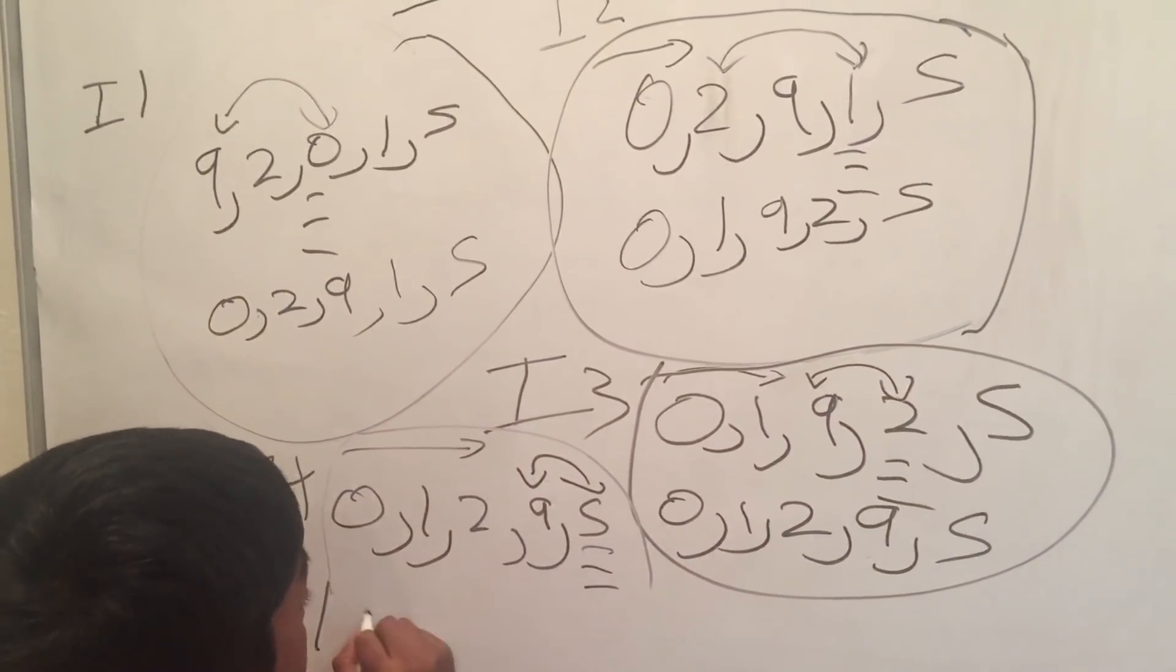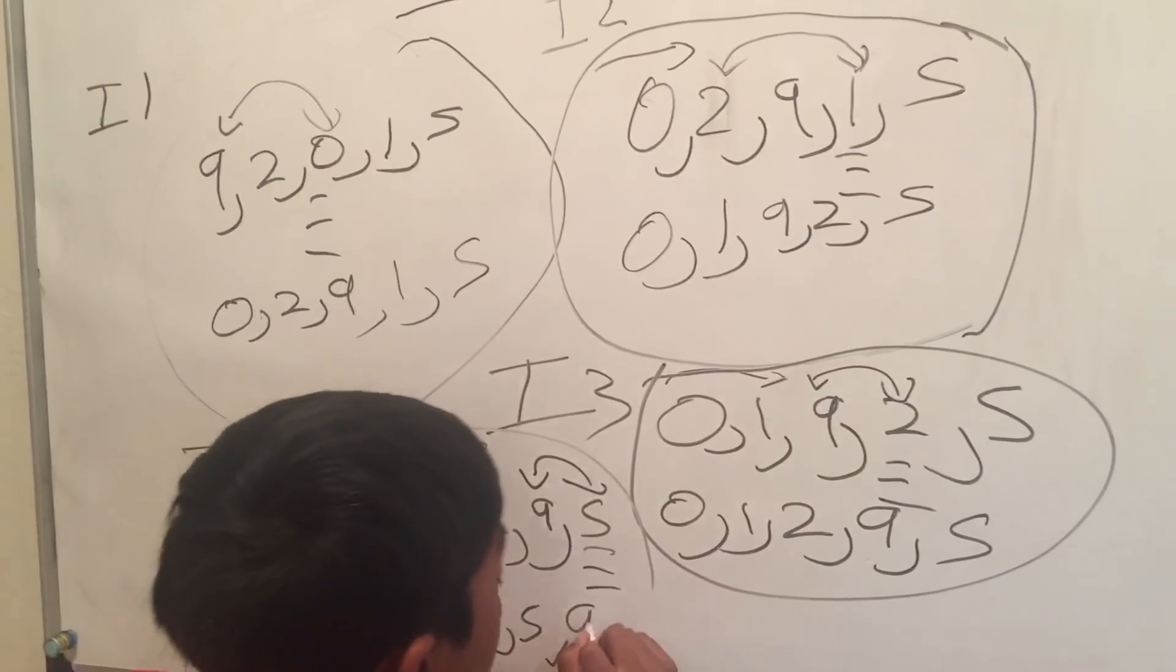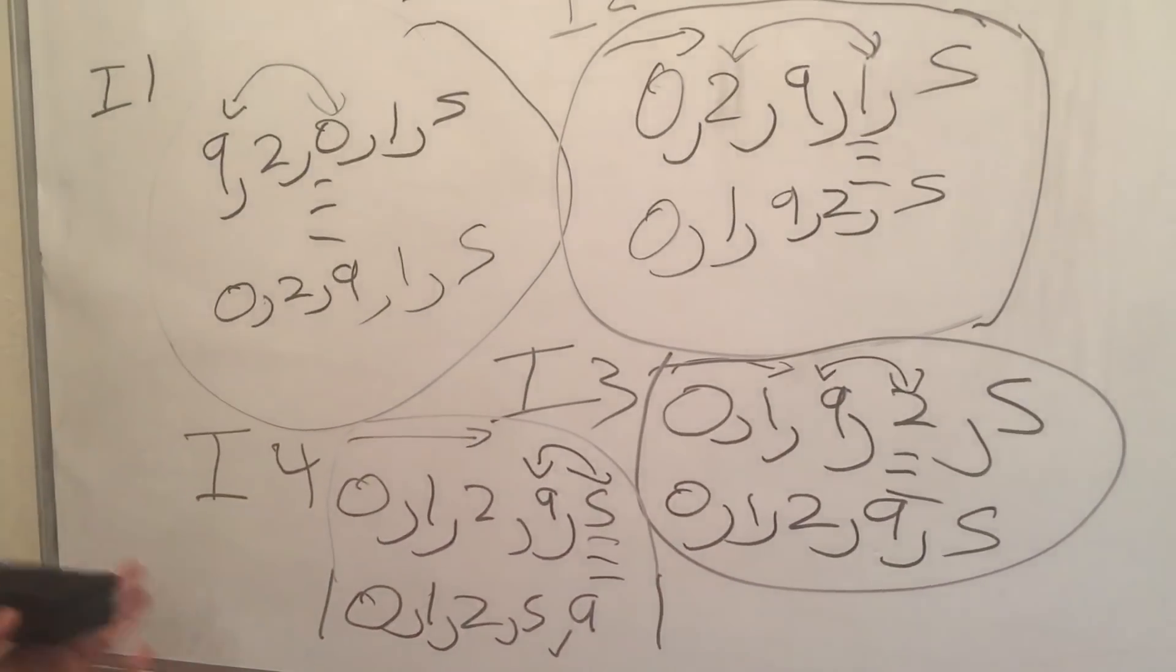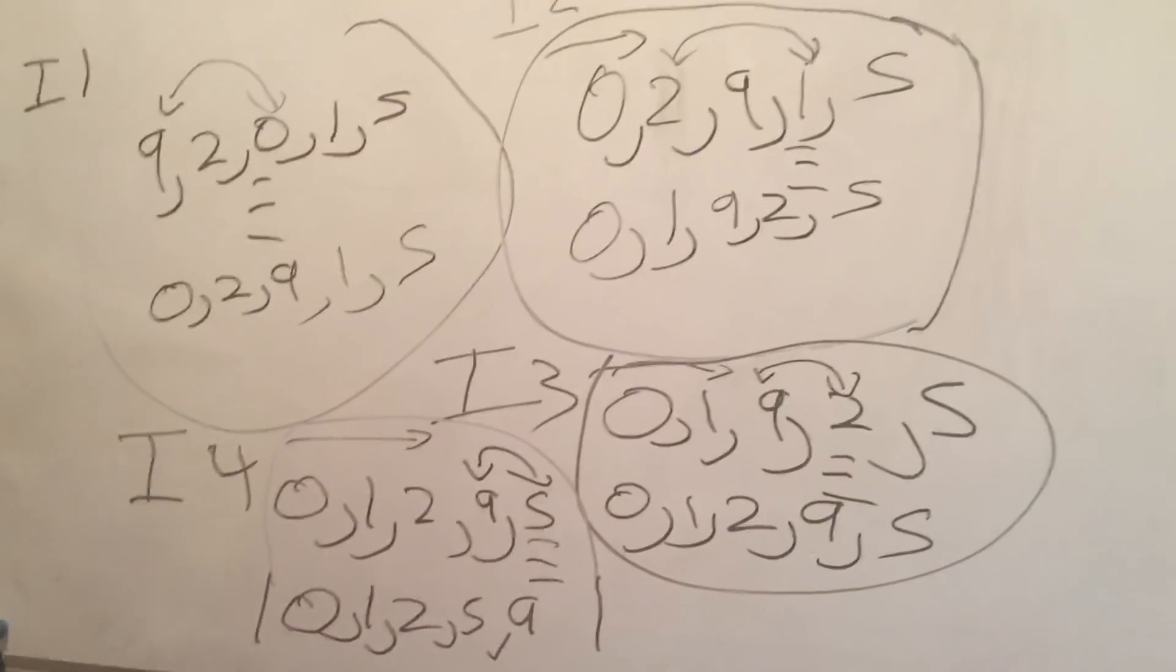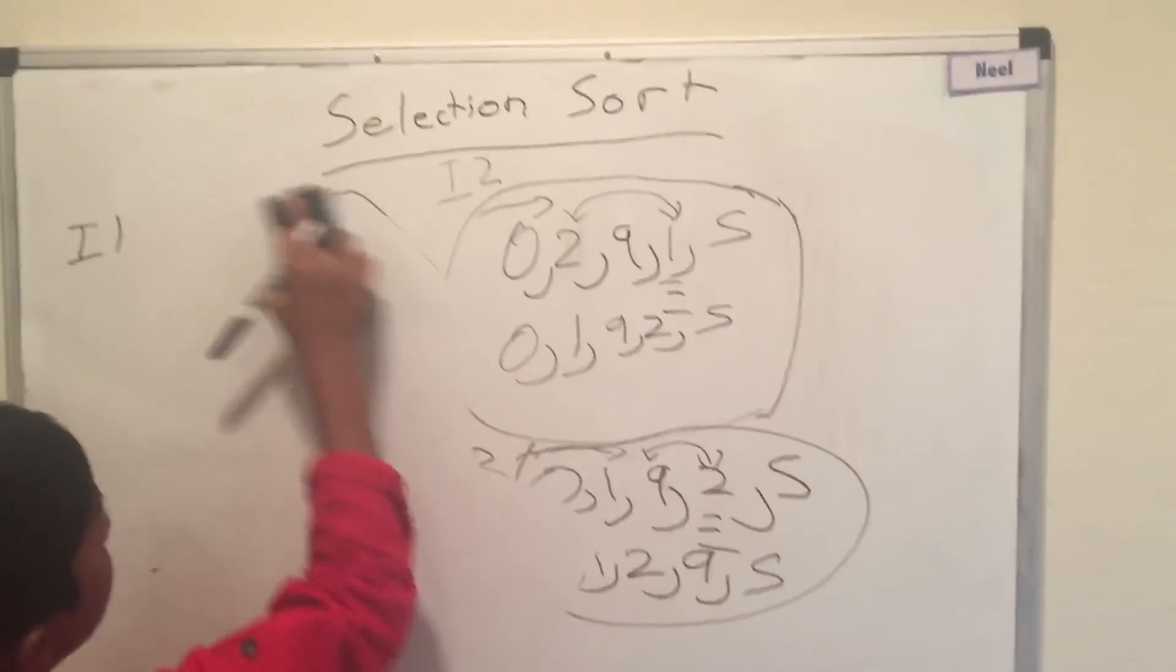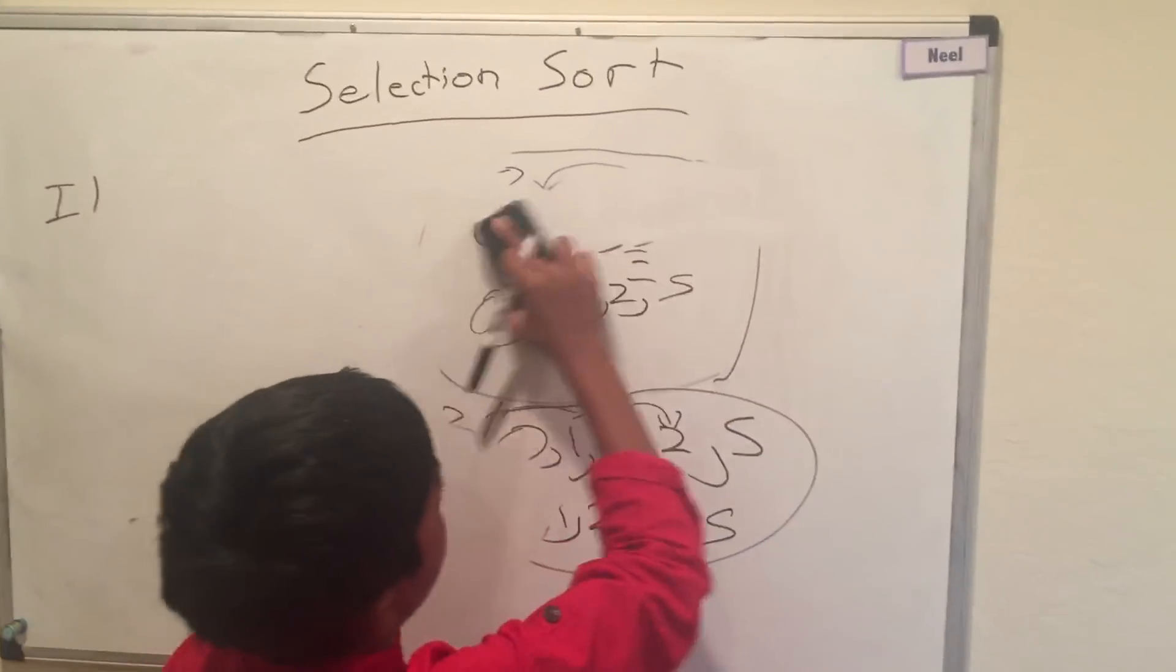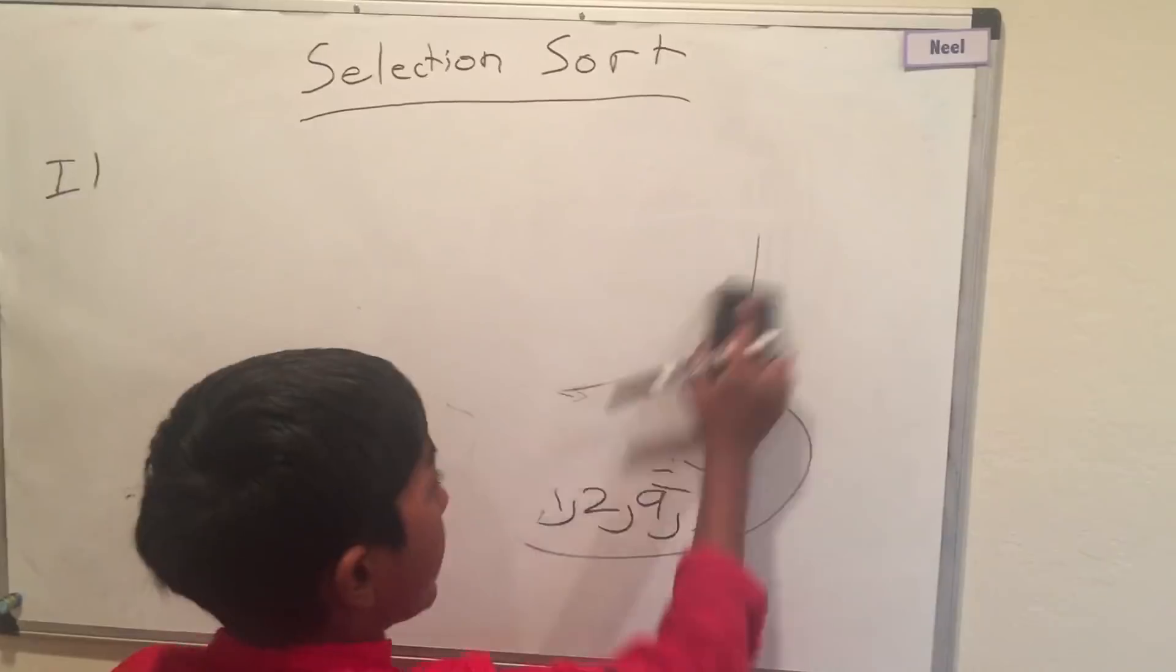And it becomes 0, 1, 2, 5, 9. This is the sorted list. So, that is Selection Sort. And that is Selection Sort. And I'm Neil Kumar.